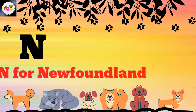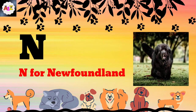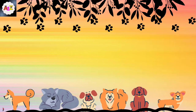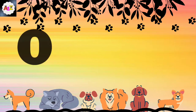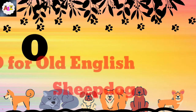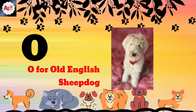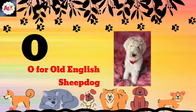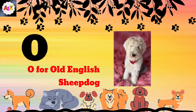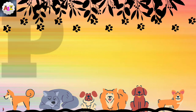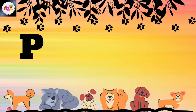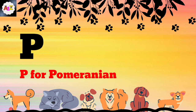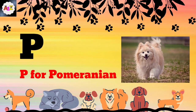N for Newfoundland. O for Old English Sheepdog. P for Pomeranian.